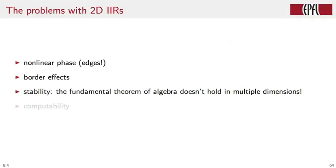Another issue is related to the design of stable IIR filters. In one dimension, we can check for stability simply by looking at the position of the poles on the complex plane. However, the fundamental theorem of algebra does not hold in multiple dimensions, and therefore there is no simple way to find the roots of a multidimensional transfer function. As a consequence, there is no simple stability criterion for two-dimensional filters. A final issue with multidimensional IIR filters is computability — in multiple dimensions we could come up with constant coefficient difference equations that are not computable.